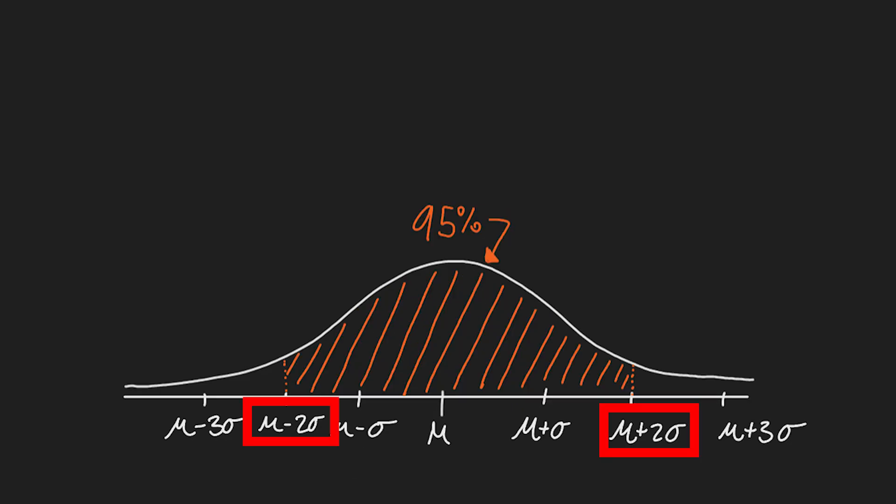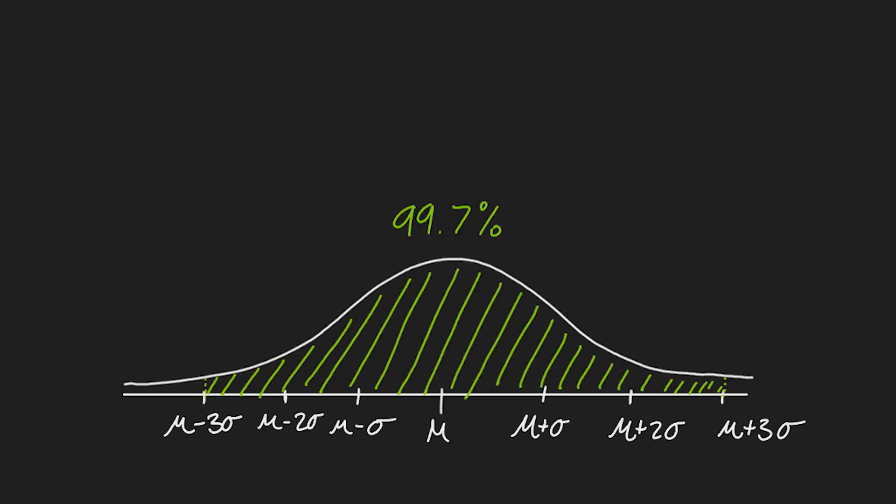95% of the data is two standard deviations out, so 95% of men are between 5-4 and 6-4. Lastly, 99.7% of men are three standard deviations out.